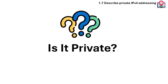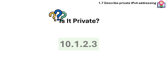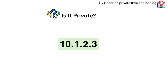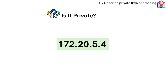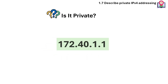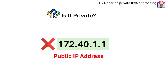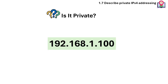A quick practice in identifying private IP addresses. Is 10.1.2.3 private? Yes, because it's within the Class A private IP range. Is 172.20.5.4 private? Yes, because it's within the Class B private IP range. Is 172.40.1.1 private? No, because it's outside the Class B private IP range. Is 192.168.1.100 private? Yes, because it's within the Class C private IP range.